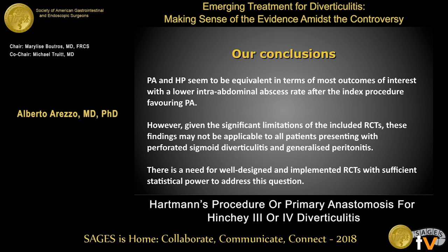Our conclusions are that primary anastomosis and Hartmann procedures seem to be equivalent in terms of most outcomes of interest, with the lower intra-abdominal abscess rate favoring primary anastomosis. However, given the significant limitations of the included RCTs, these findings may not be applicable to all patients presenting with perforated sigmoid diverticulitis and generalized peritonitis, and there is a need for well-designed randomized controlled trials with sufficient statistical power.